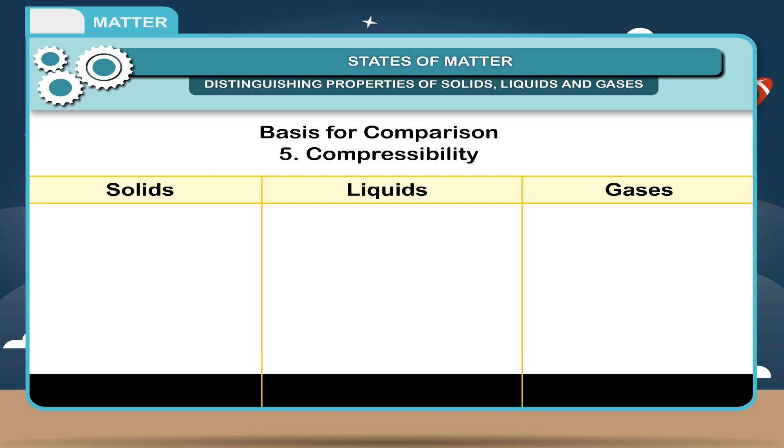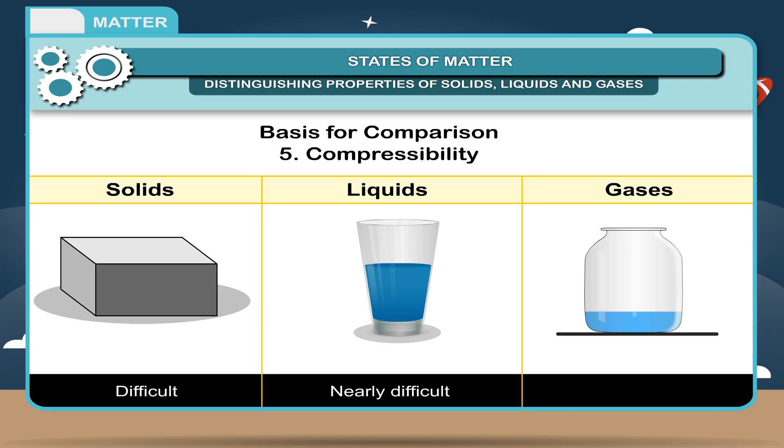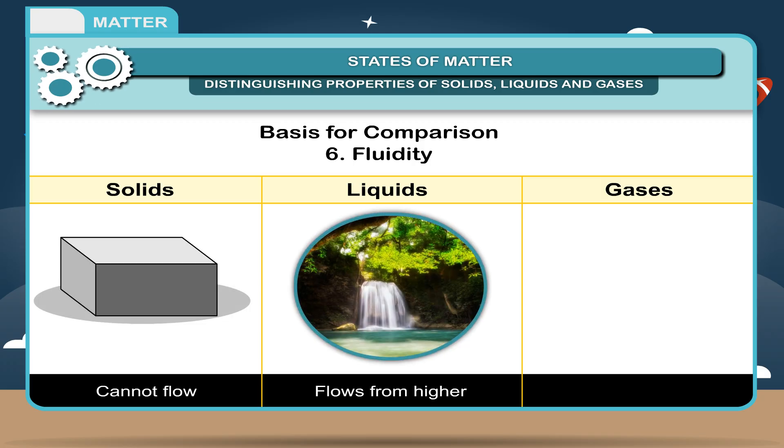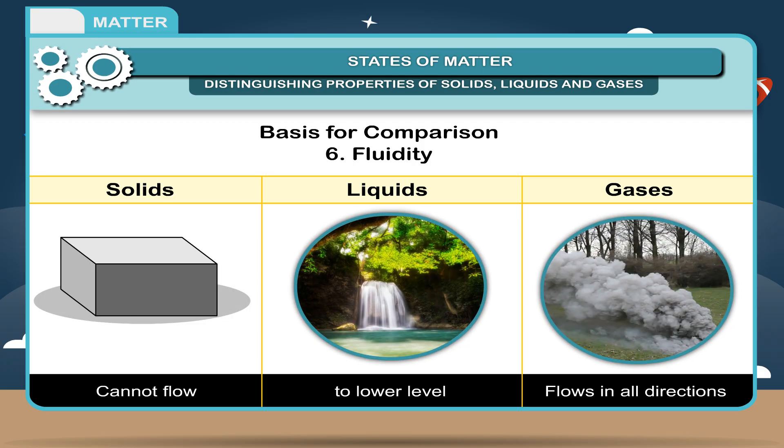5. Compressibility: Difficult for solids, nearly difficult for liquids, easy for gases. 6. Fluidity: Solids cannot flow. Liquids flow from higher to lower level. Gases flow in all directions.